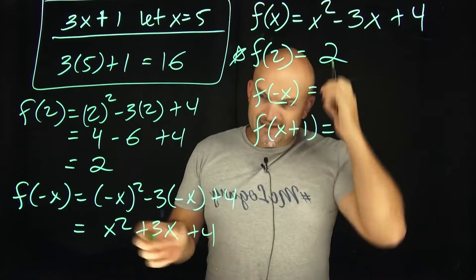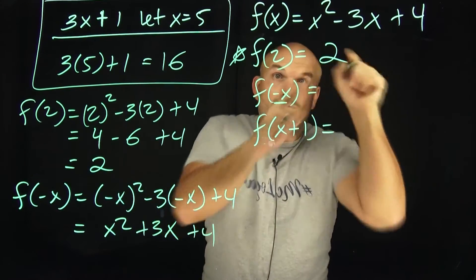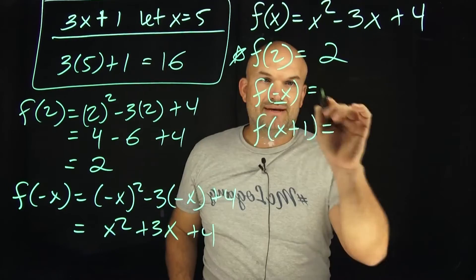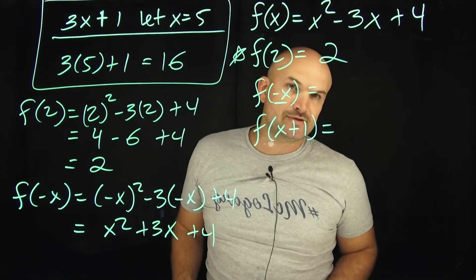So now my expression here, in this case, is not a value. It's not a number like it was up here. Because I couldn't replace a number for all these x's, I replaced a negative x. But now my expression is going to be x squared plus 3x plus 4.